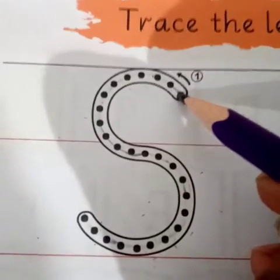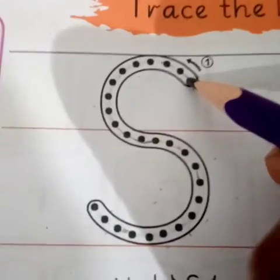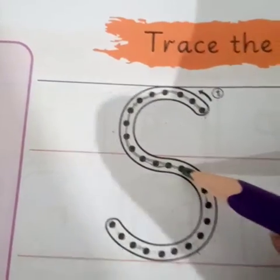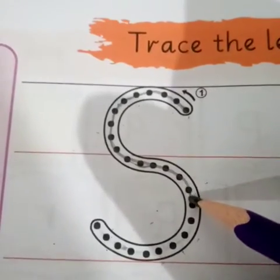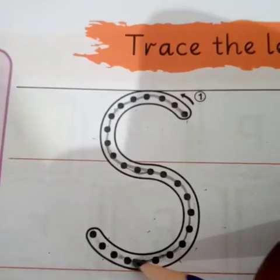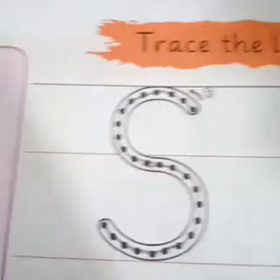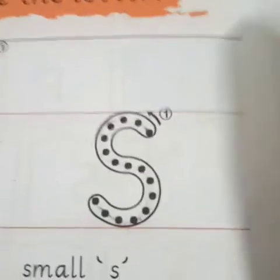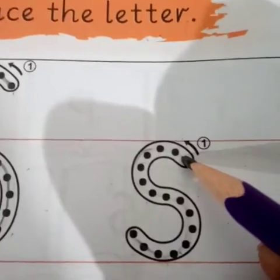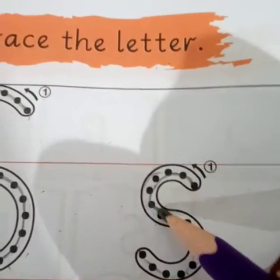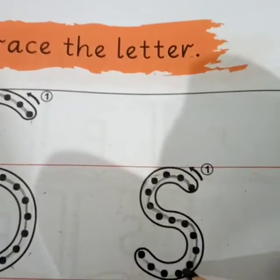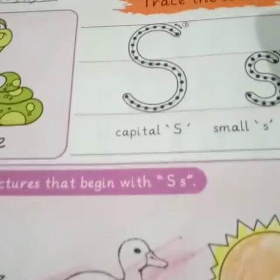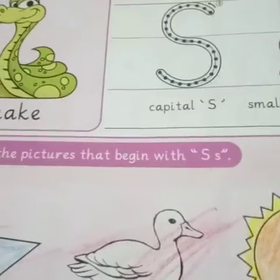Let's start. Put your pencil on point number one and move your hand like this. Join the dots. Here we have our capital S. Now we will trace our small letter — small S — same like this. S, S — snake, snake. S says 'sss'.